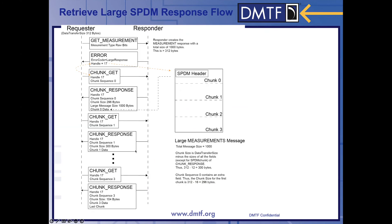To retrieve a large SBDM response, here is an illustration using get measurement. The requester issues the get measurement. The responder notices it's too large and sends an error message with error code large response and a handle to help the requester retrieve that large message. The requester uses chunk get to get the first chunk, and the responder sends that back in chunk response. The requester now has the first chunk and repeats that sequence again with chunk get until the very last chunk.